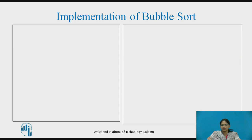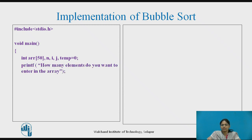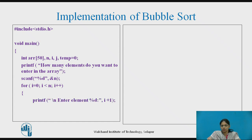Let us see the implementation of bubble sort using C programming. First, declare an array of size 50 and integer variables n, i, j, and temp initialized to 0. Using a printf statement, ask the user how many elements to enter, and using scanf, collect that number into n. Then use a for loop from i equal to 0 up to n, taking one element from the user in each iteration and placing it at the ith position of the array.